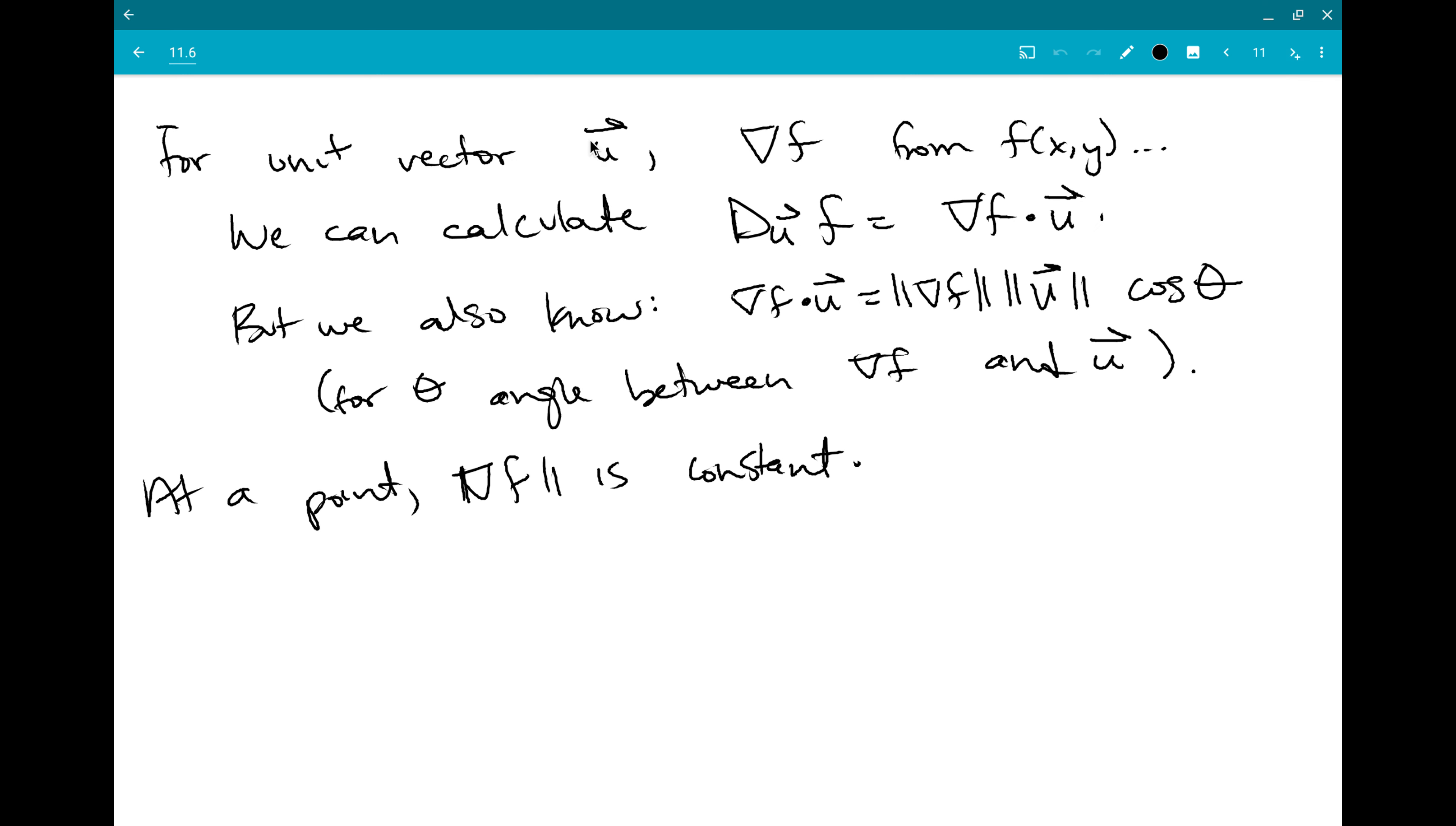And if I've done my job and u is a unit vector, then the magnitude of u is equal to 1. So the directional derivative is going to be the magnitude of grad f times cosine theta.